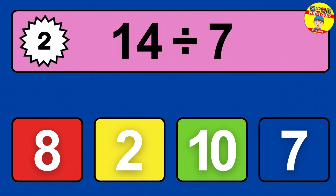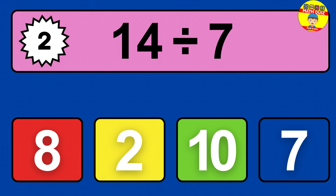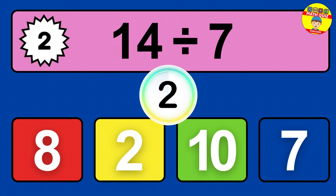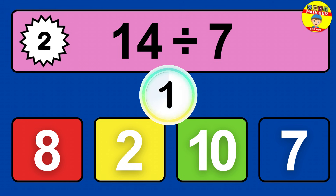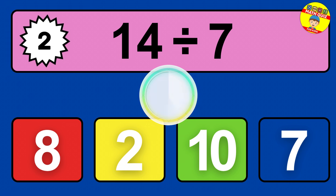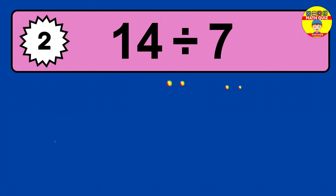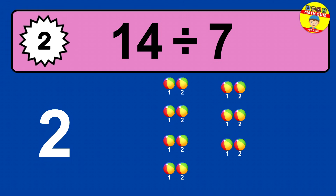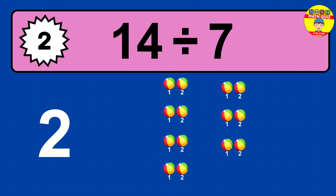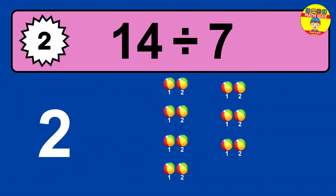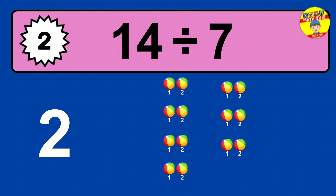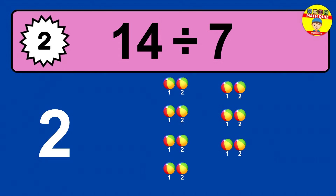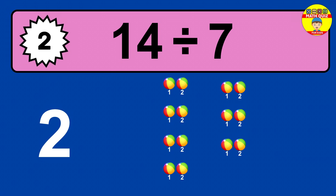14 divided by 7 — time to think. Let's go to the solution. Divide the number 14 by 7. Each group contains 7 units, so dividing 14 by 7 results in 2 equal groups. Thus, the result is 14 divided by 7 equals 2.